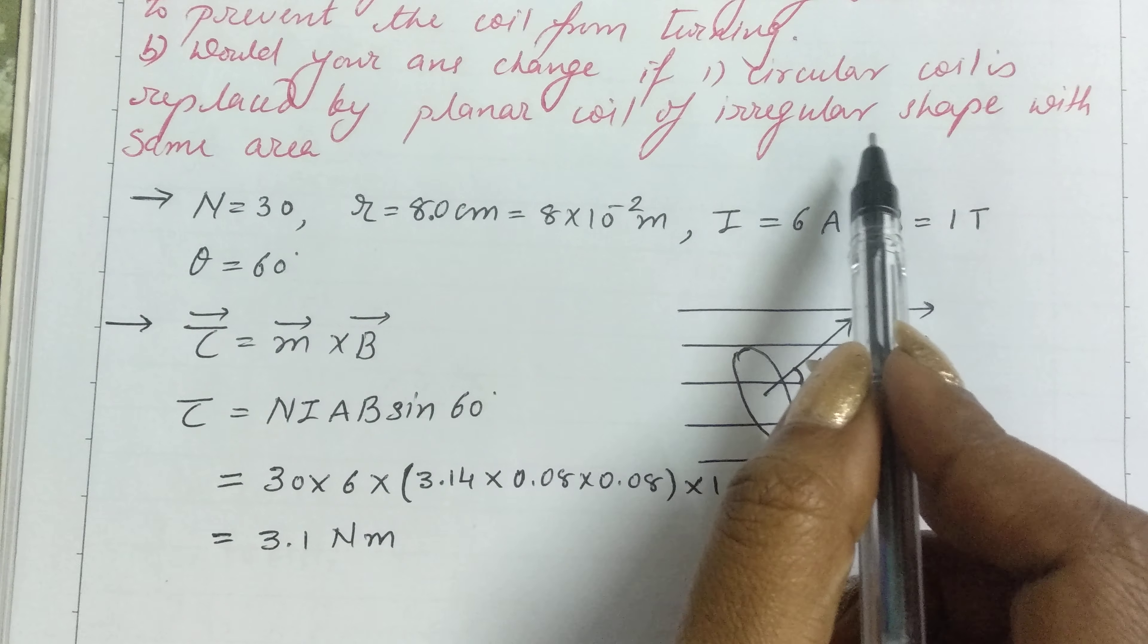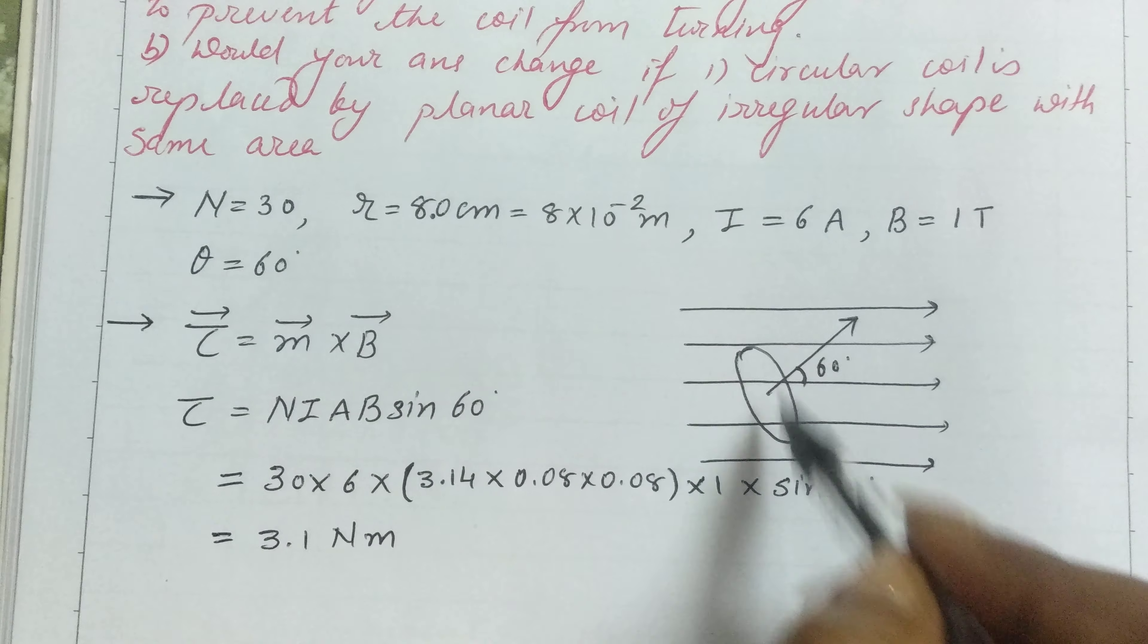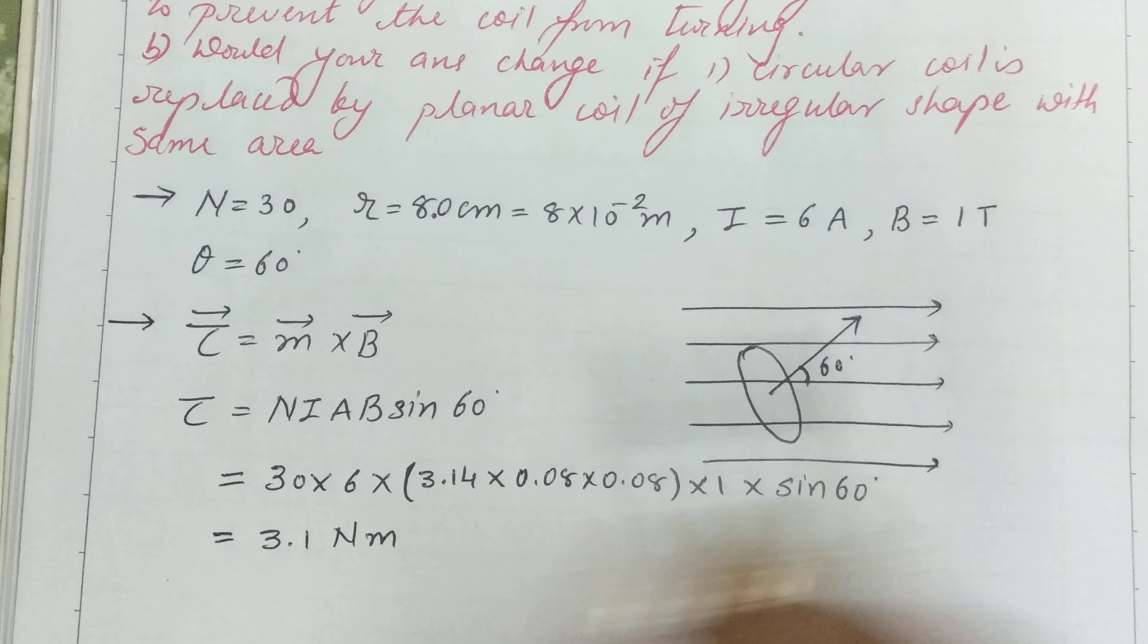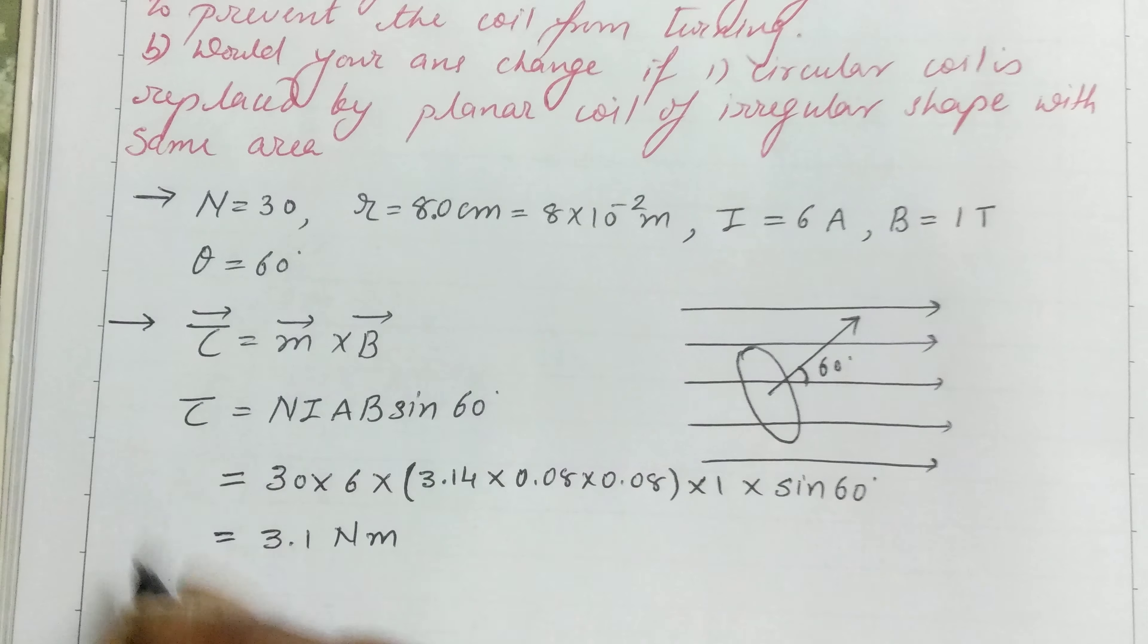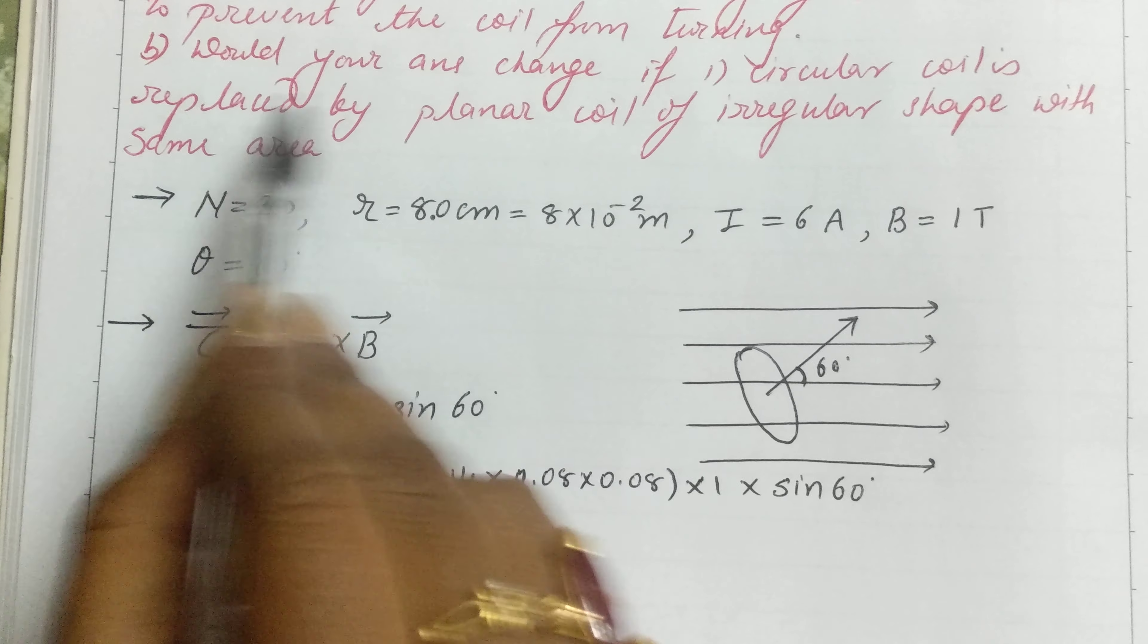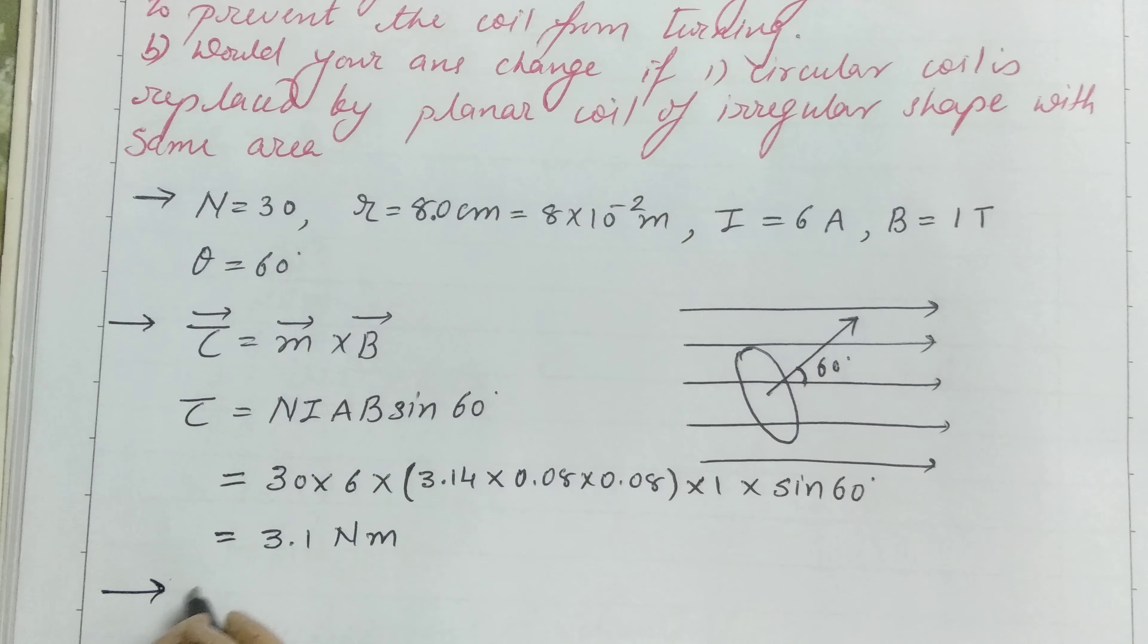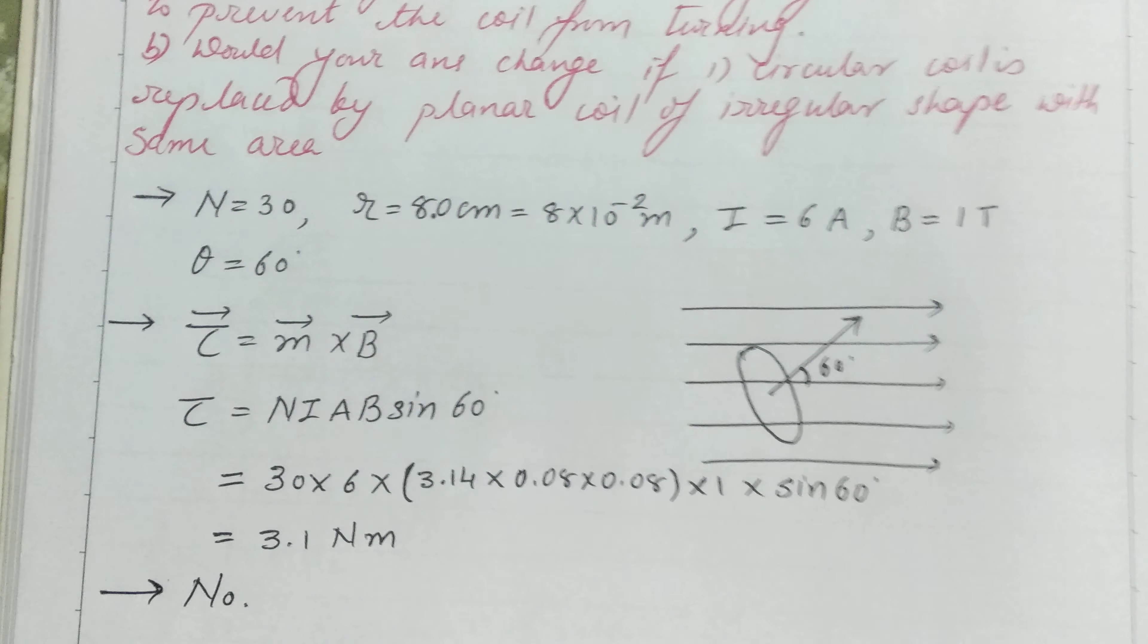If we have a coil of any irregular shape but the area remains the same as the circular coil, then the torque also remains the same. So the answer is no, our answer will not change.